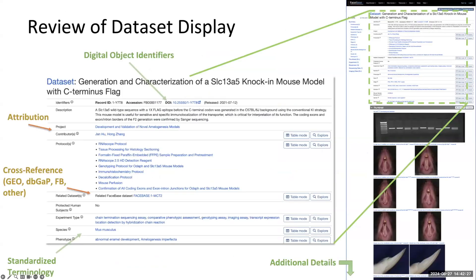When a data set is composed on FaceSpace, it gets a digital object identifier — an archive-grade persistent identifier for your data that is resolvable and takes readers right to your data on FaceSpace. In addition to the title, description, and keywords from standardized terminology, you may also want to include cross-references to data submitted to another site or repository, like GEO or dbGaP, or cross-references to related FaceSpace data sets if your data is a secondary analysis.